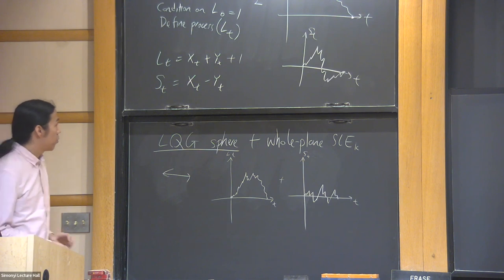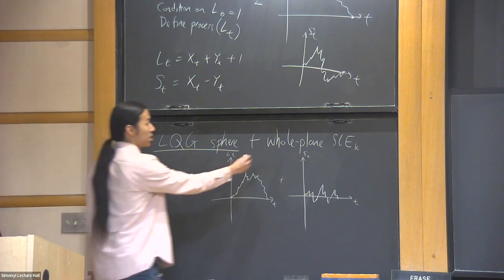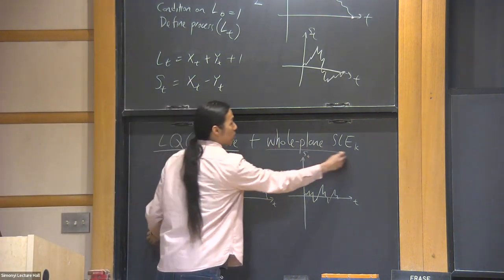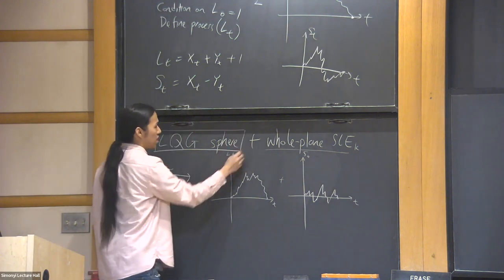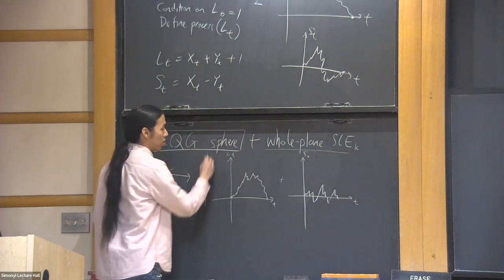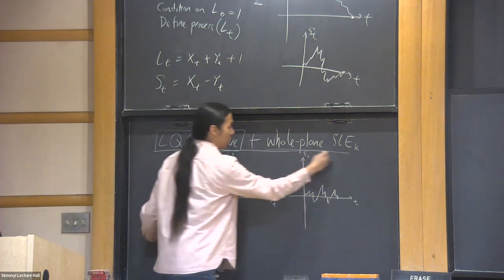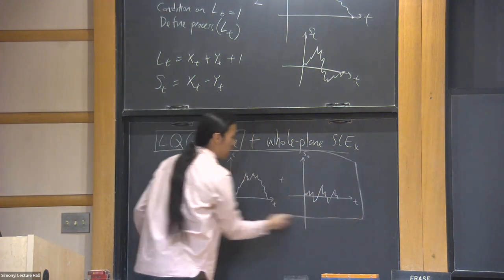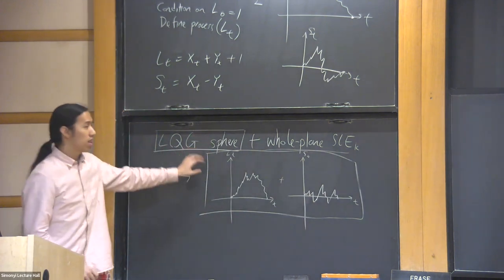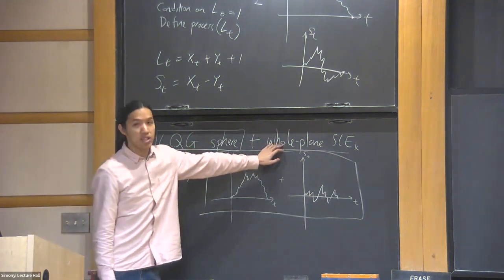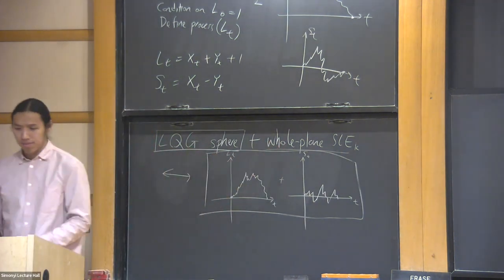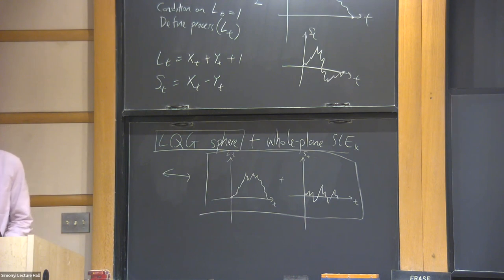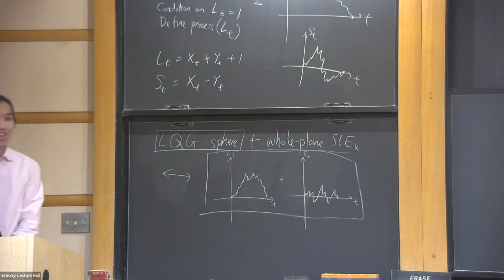So we want to show that this curve is reversible, but we know that the LQG sphere is reversible and the whole description in terms of (L_t, S_t) is reversible. Those two together is enough to prove reversibility of whole-plane SLE. That's the end of the talk. Thanks for your attention.